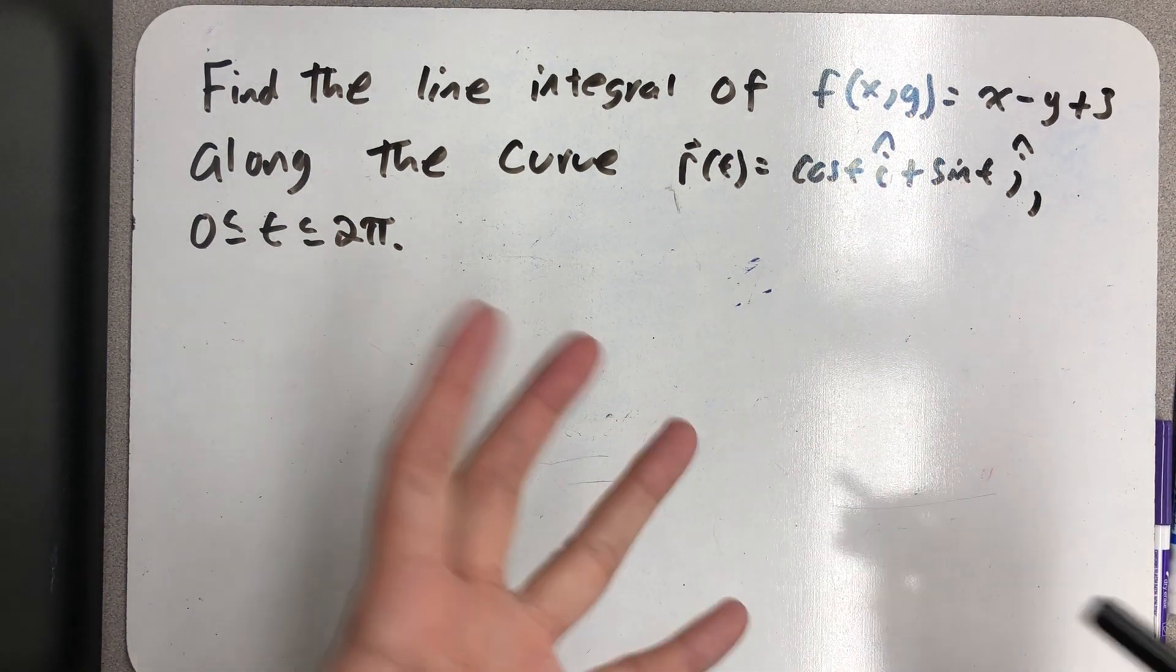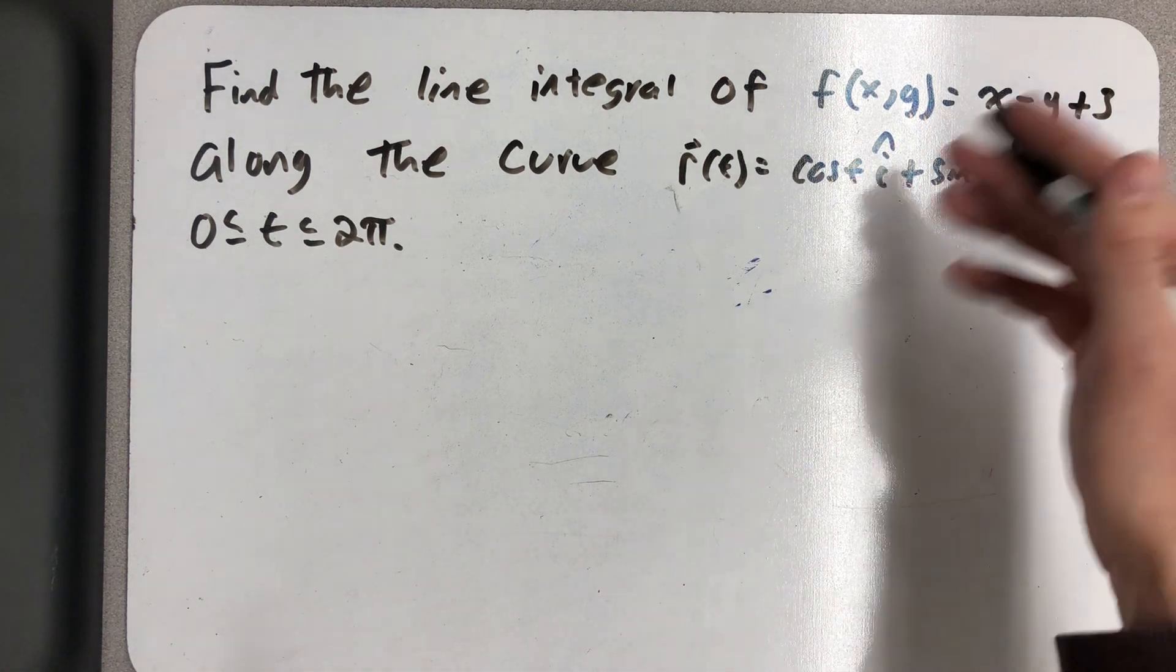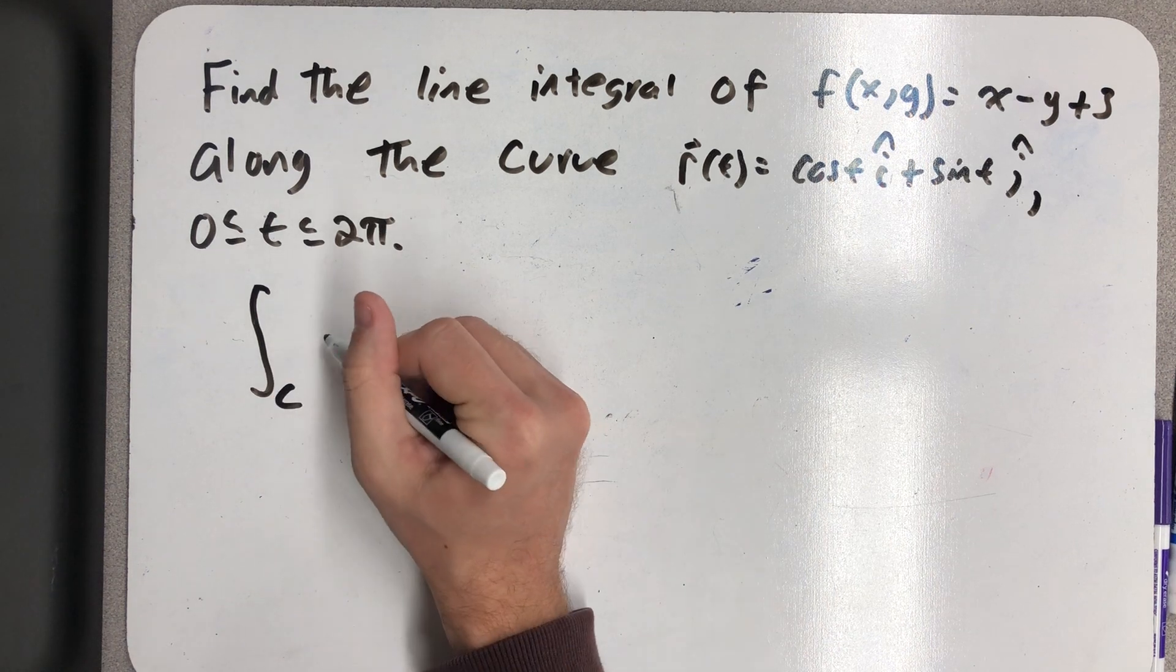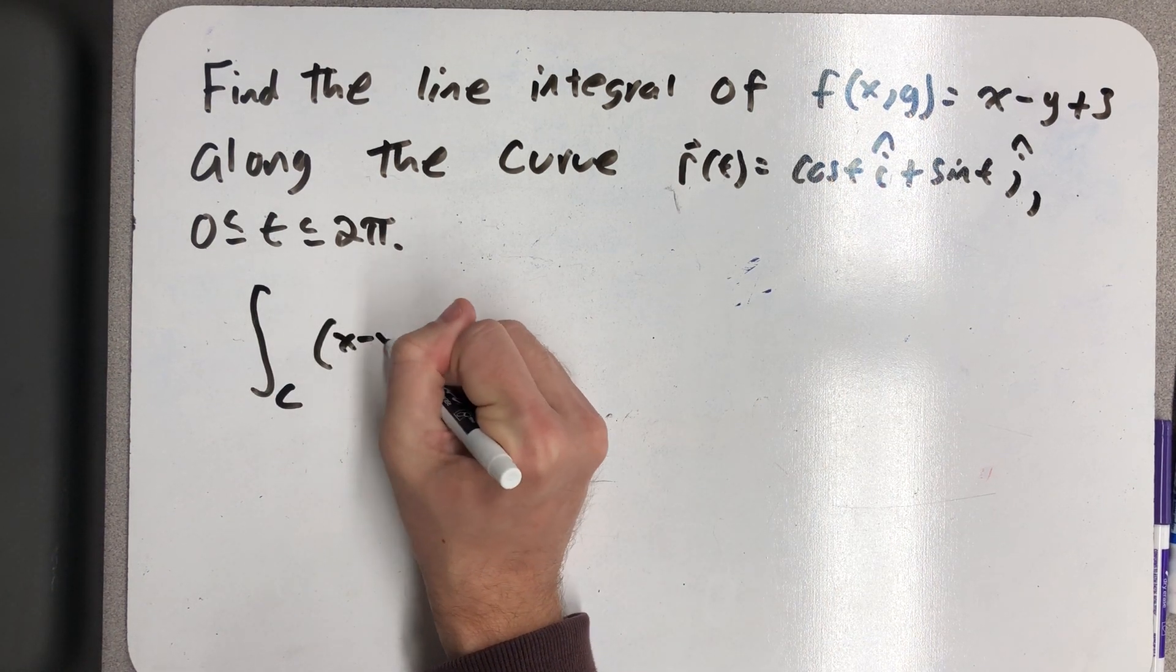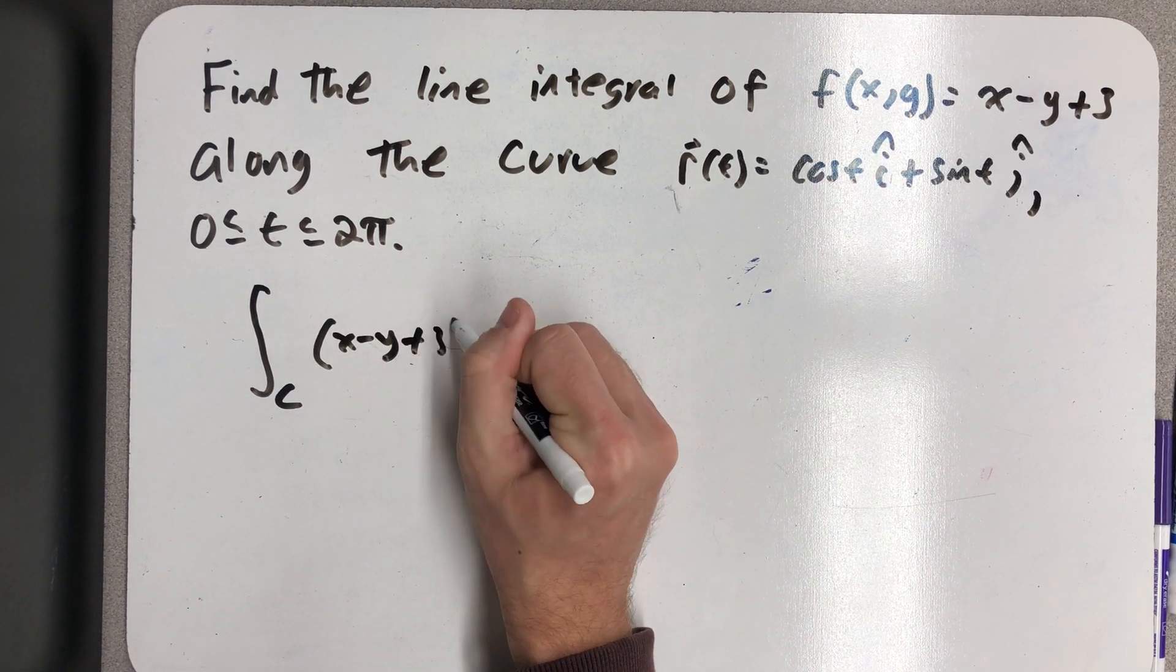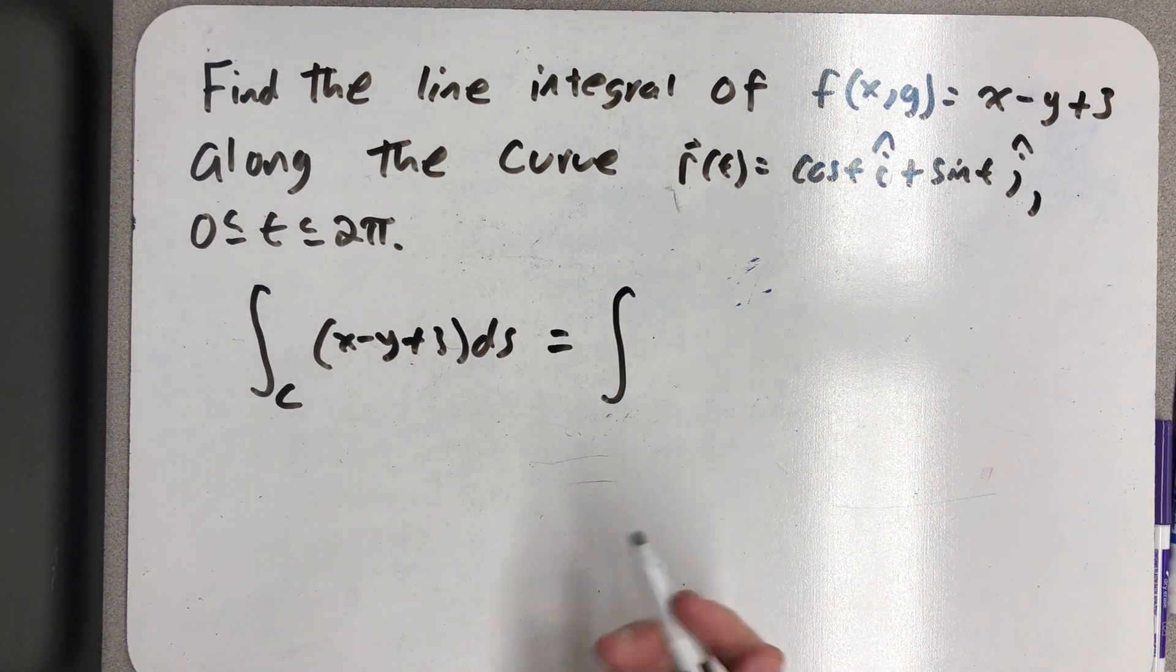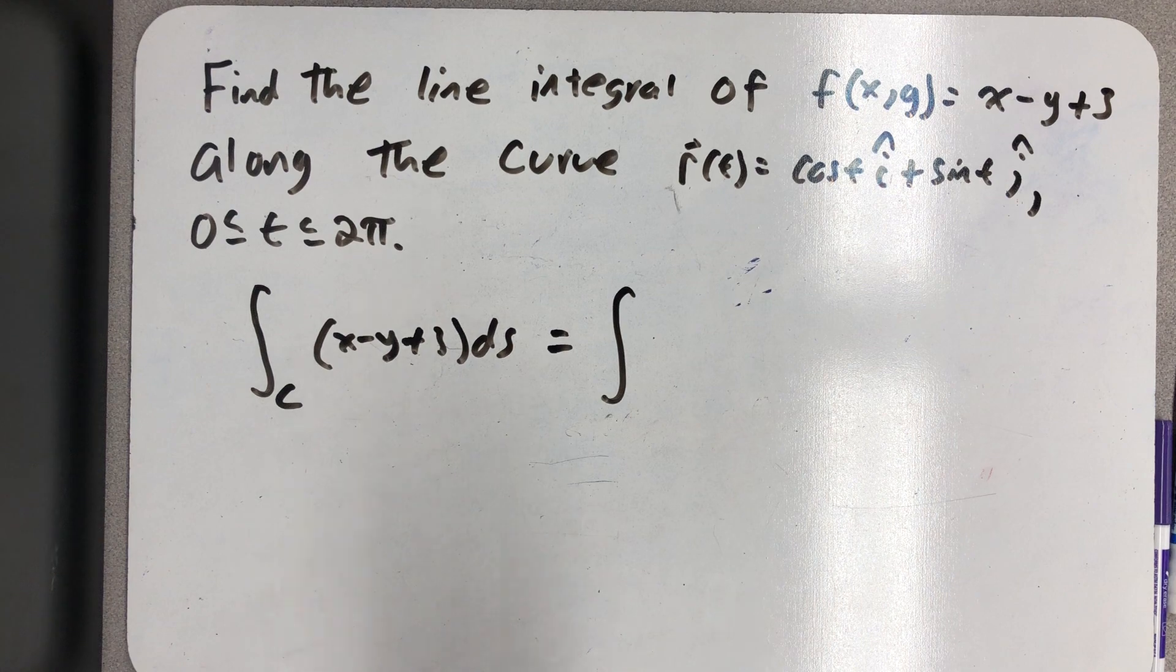So my curve is just the unit circle, and now I'm asked to find the line integral over that unit circle. So I start off with this, and first up, I need to convert this to an integral on the variable t.